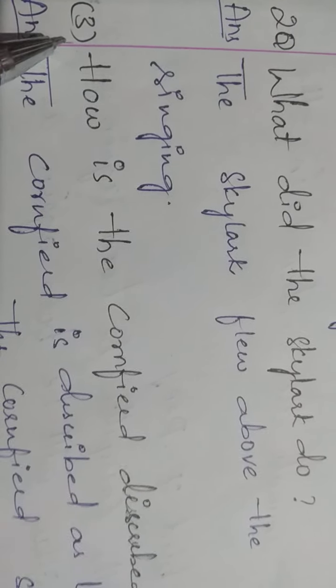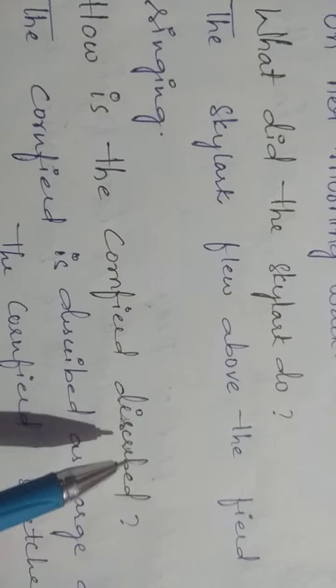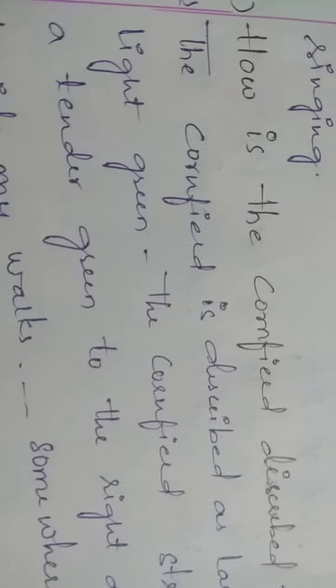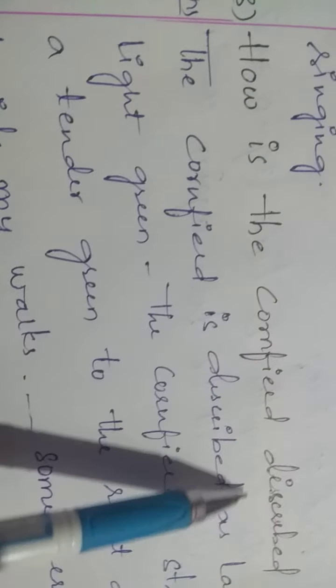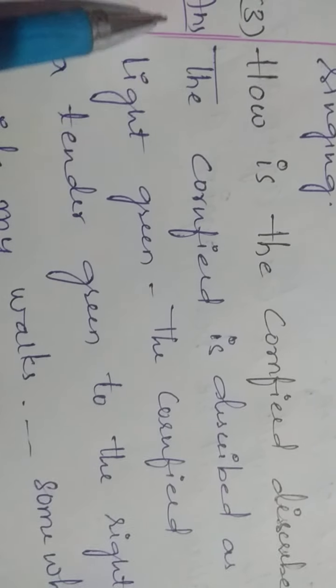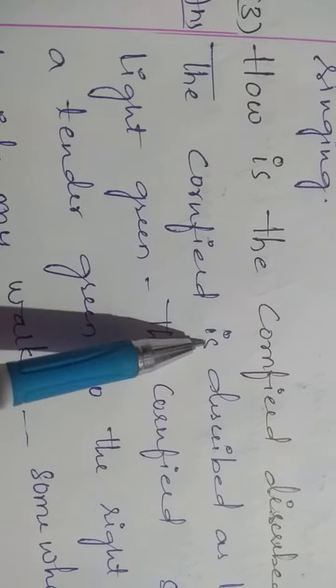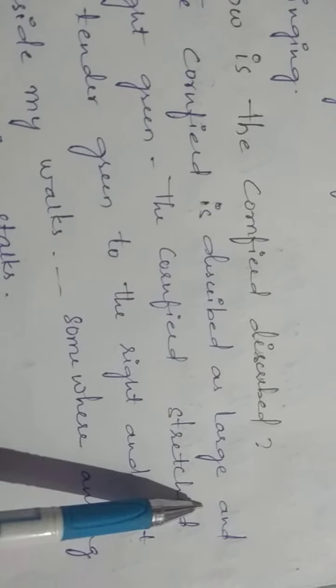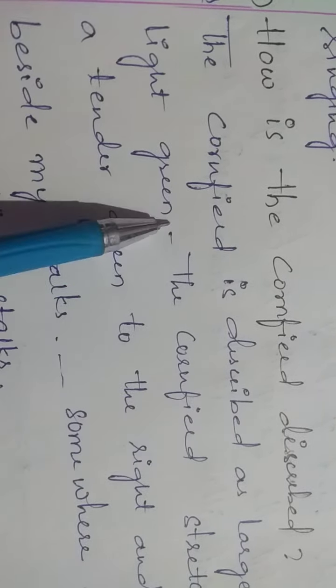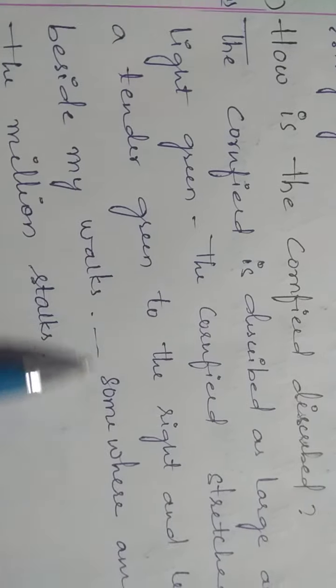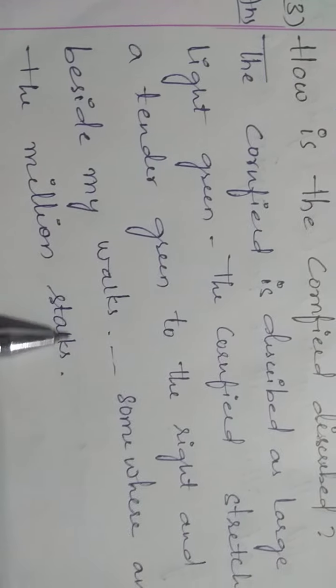Now see the third one. How is the cornfield described? Cornfield is described as large and light green. Somewhere among the millionth stalk. Here you can see the poet is saying about the cornfield.